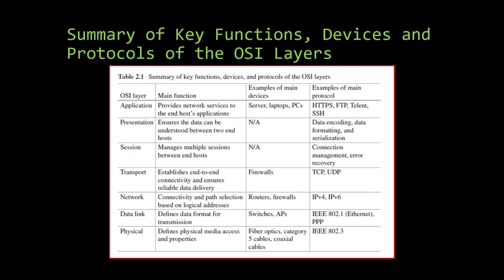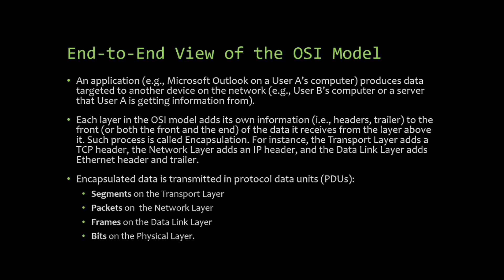Those are the seven layers of the OSI model. Now let's look at the end-to-end view — a real-life application. For example, an application like Microsoft Outlook on a user's computer produces data targeted to another device on the network, such as a server. Each layer in the OSI model adds its own information to the data it receives.